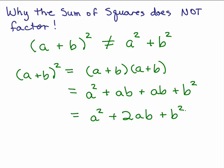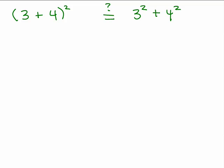So hopefully you can believe that a plus b squared is not simply a squared plus b squared, but instead it's a squared plus 2ab plus b squared. Let's look at an example of numbers to see why a plus b squared is not equal to a squared plus b squared when a is 3 and b is 4.